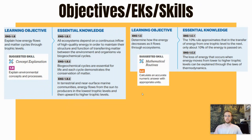We're combining two different topics here today, so we have two different objectives and two skills to practice. The first objective is to explain how energy and matter flow through trophic levels. The second objective is to determine how energy decreases as it flows through an ecosystem. The two skills we'll practice are explaining an environmental concept or process, and calculating an accurate answer with units — so we will be doing some math at the end of this video.